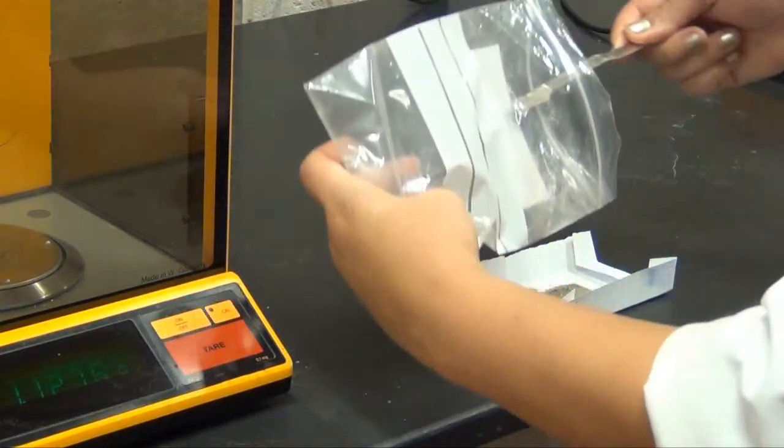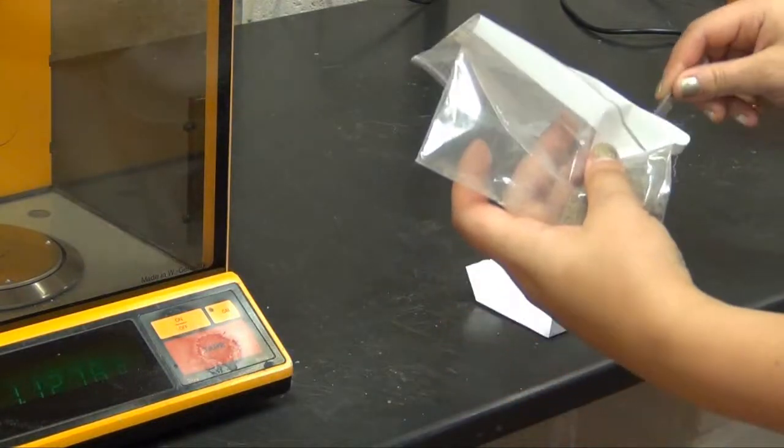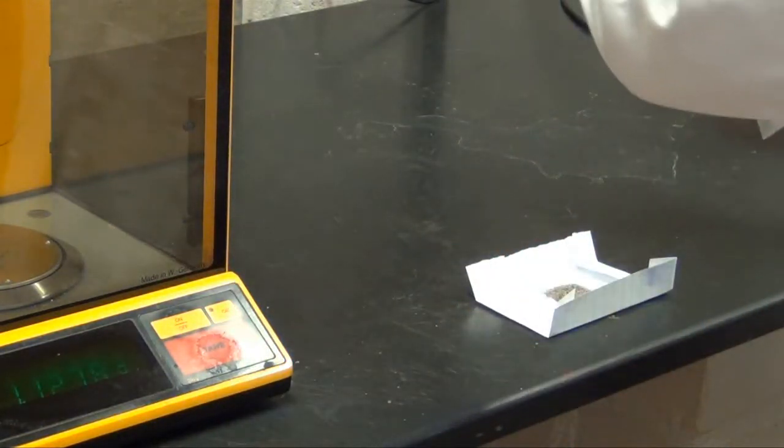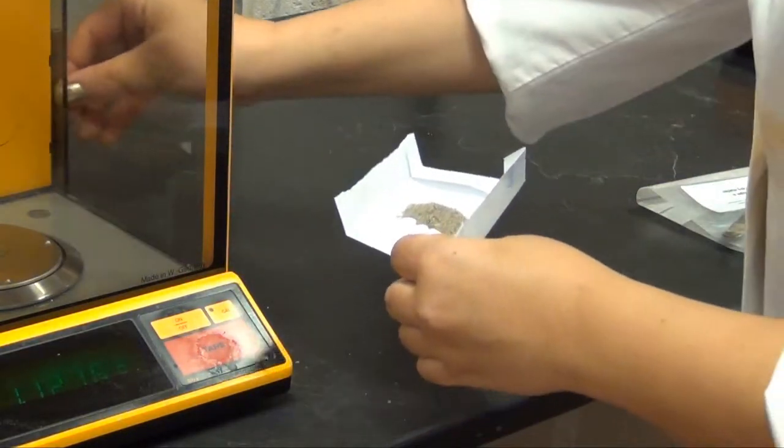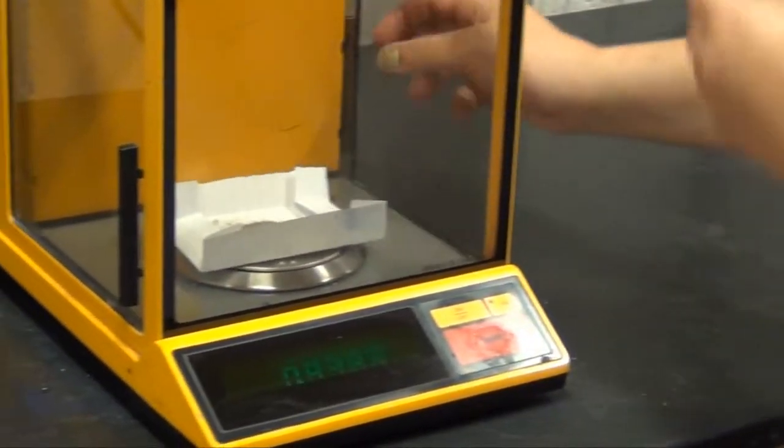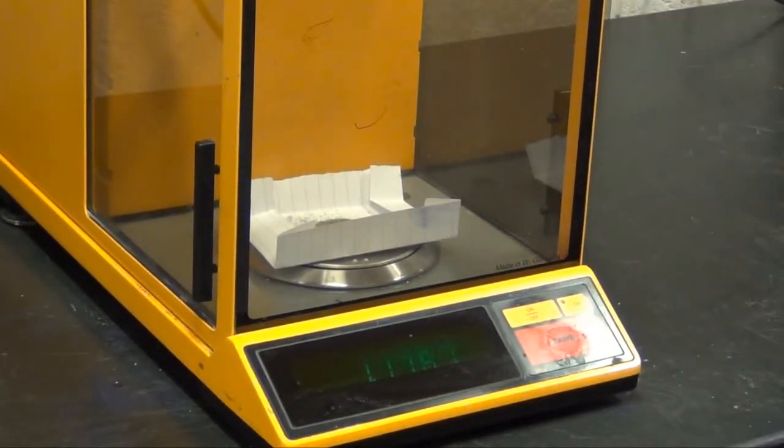Normally the sample will be recorded to three decimal places and as the required amount is one gram, it will be as close as possible to that final amount.